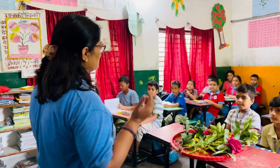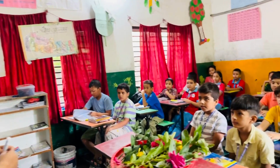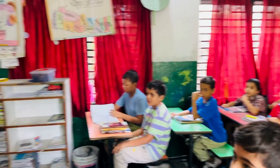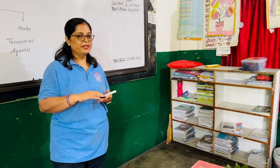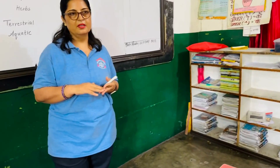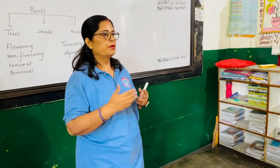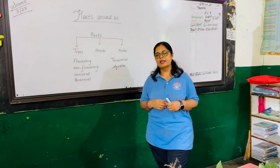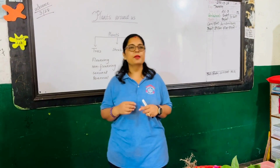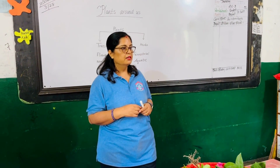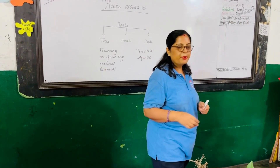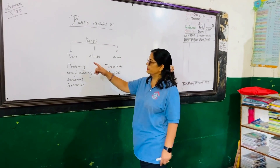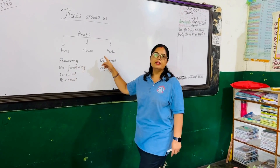There are different types of plants around us. Some are very big, some are very small, some are very tall. Some plants live for many years while some plants live for few months. Some plants bear flowers while some plants do not. So on the basis of shape and sizes, plants are divided into trees, shrubs and herbs.